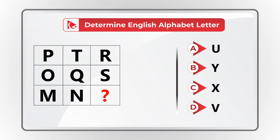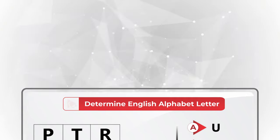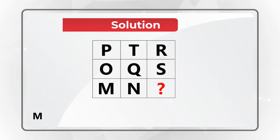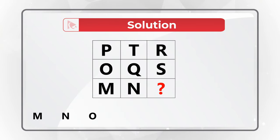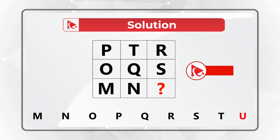Give yourself a little bit of time to see if you can come up with the solution. I have full confidence that you found it. If you were studying the alphabet, you might remember the sequence in the middle of the alphabet: M, N, O, P, Q, R, S, T. You would remember that the missing letter in the sequence — the next one — would be letter U.